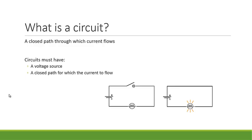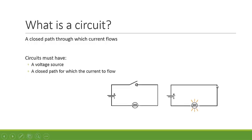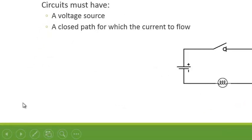That's how switches work. Switches, as you can see here, open up the circuit and do not allow current to flow. When that switch is closed, the current flows through and you can see that the light bulb has lit up in this case.